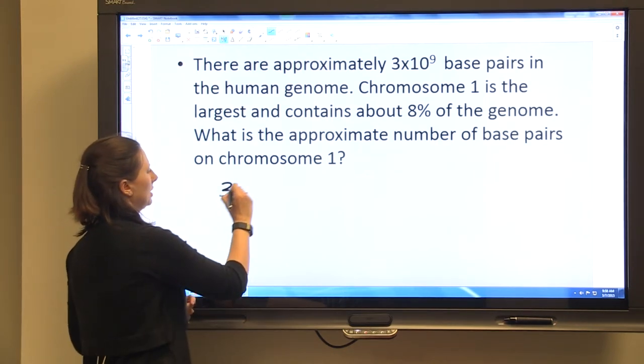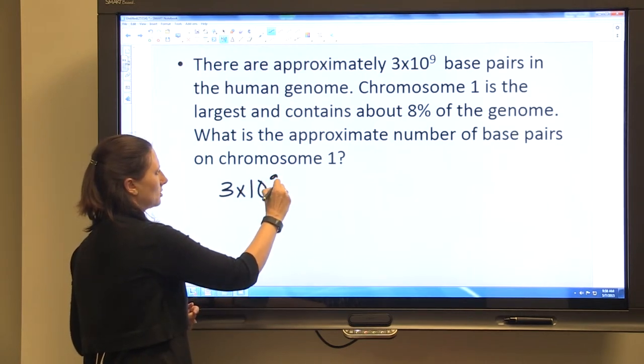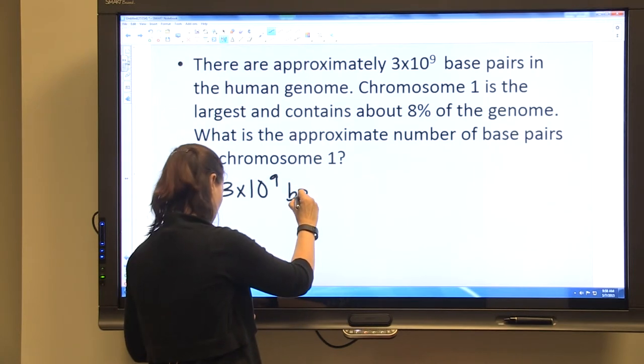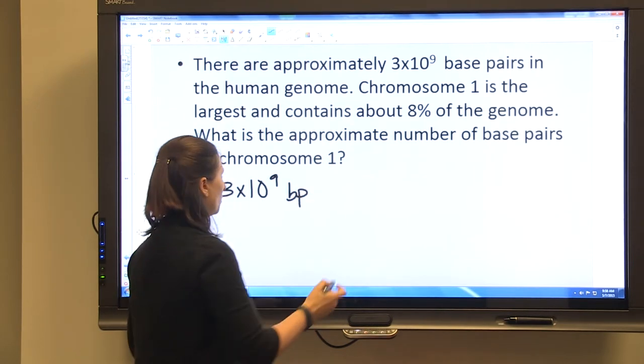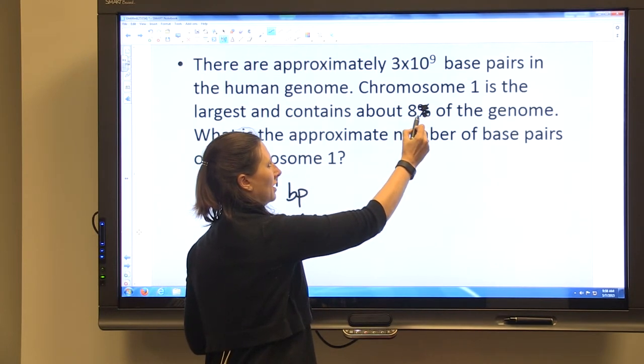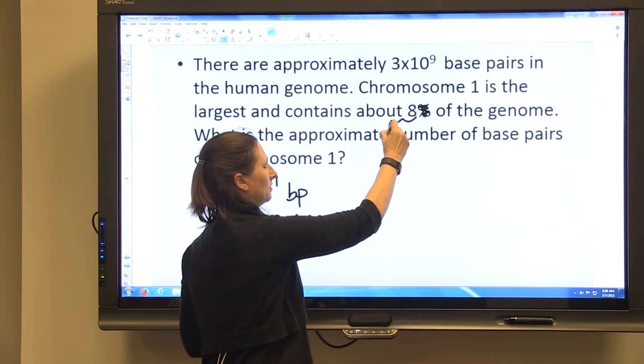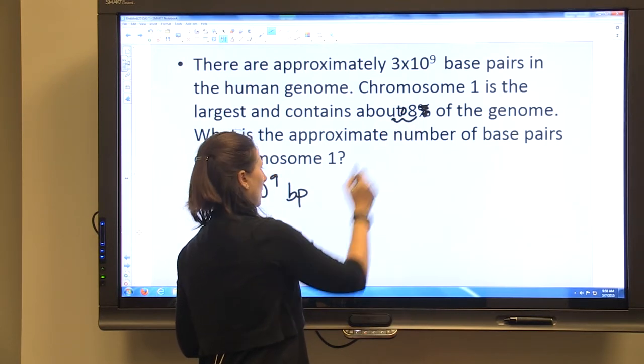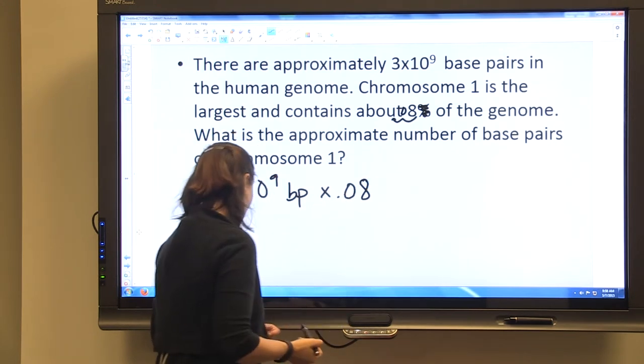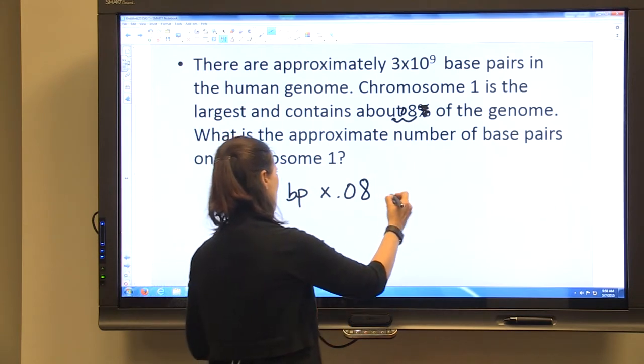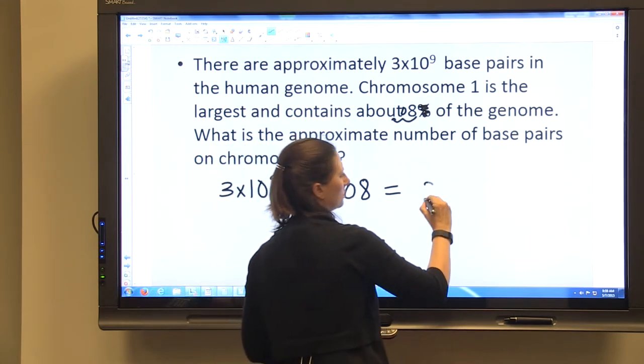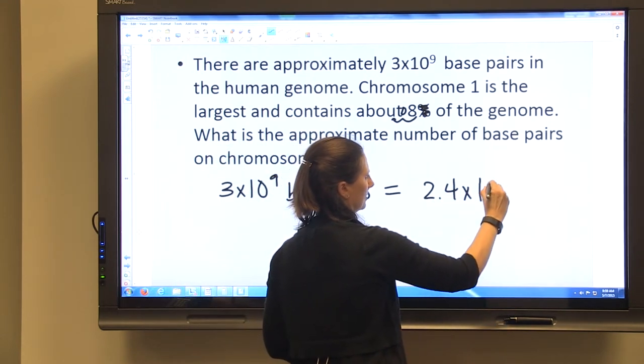So we have 3 times 10 to the 9th in the total genome base pairs. So we're just going to call those BP. And chromosome 1 has about 8%. And I'm just going to do this by creating a decimal out of our percentage. And so times 0.08, and that should give us the number of base pairs on chromosome 1. So I have 2.4 times 10 to the 8th.